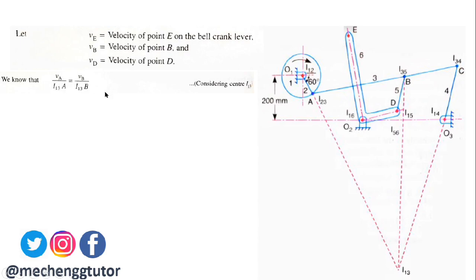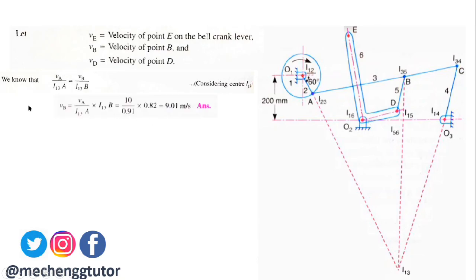Considering instantaneous center I13, the equation is: VA / I13A = VB / I13B. That is, the ratio of velocity at point A to distance I13A equals the ratio of velocity at point B to distance I13B. Rearranging this formula, we get VB = 9.01 meters per second — that is the velocity of point B on link AC.